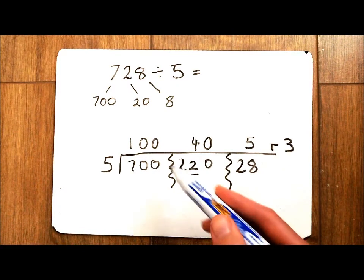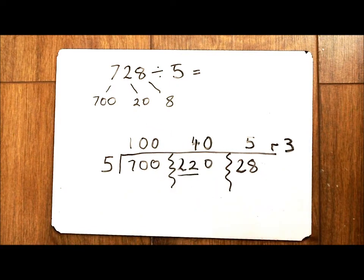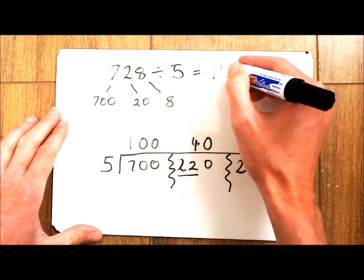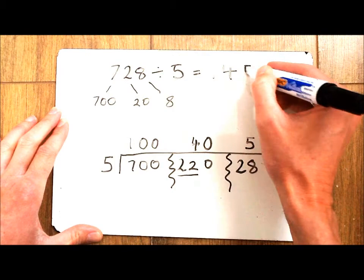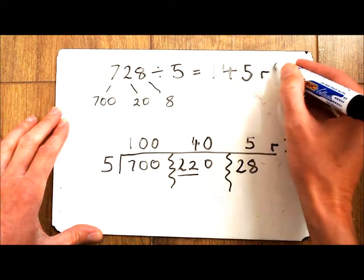So my answer to 728 divided by 5 using the expanded short division method is 145 remainder 3.